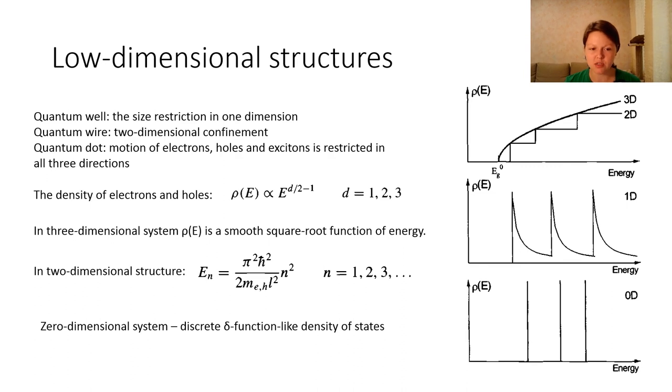The zero-dimensional system has a discrete delta function-like density of states. Here, the infinite motion of quasiparticles in all directions occurs, which means that a finite number of atoms and elementary excitations within one quantum dot can be obtained.